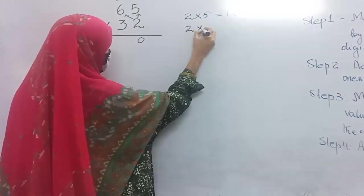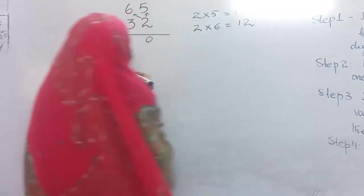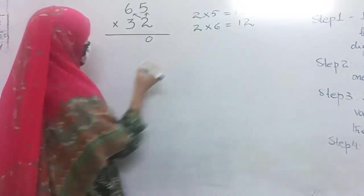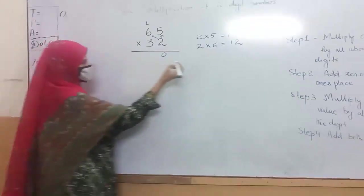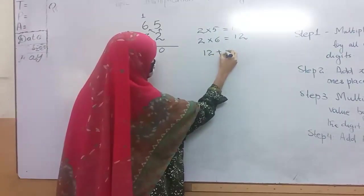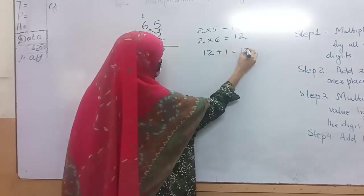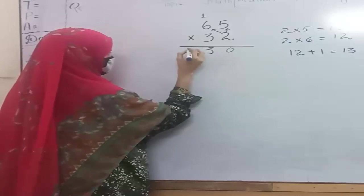2 multiplied by 6 equals 12. In 12 we add 1. Now the result will be 13. We write here 13.